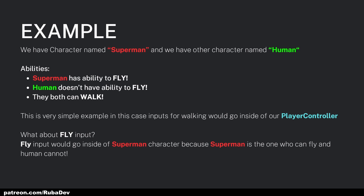Here's an example: we have a character named Superman and another named Human. Superman has the ability to fly and Human doesn't, but they both can walk. In this case, inputs for walking will go inside the Player Controller because both characters can walk and both use the Player Controller. But the fly input would go inside the Superman Character class, because Superman is the one who can fly and Human cannot.